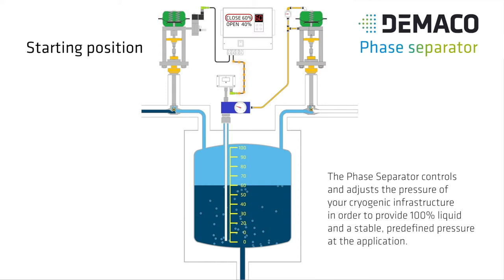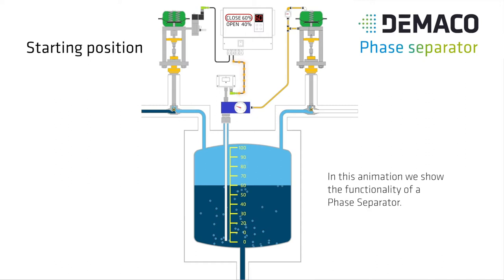The Phase Separator controls and adjusts the pressure of your cryogenic infrastructure in order to provide 100% liquid and a stable, predefined pressure at the application. In this animation we show the functionality of a Phase Separator.